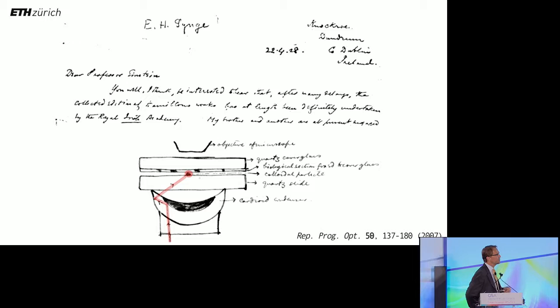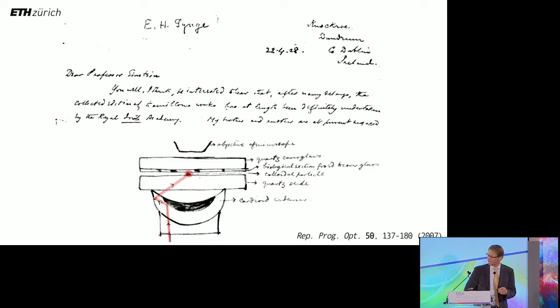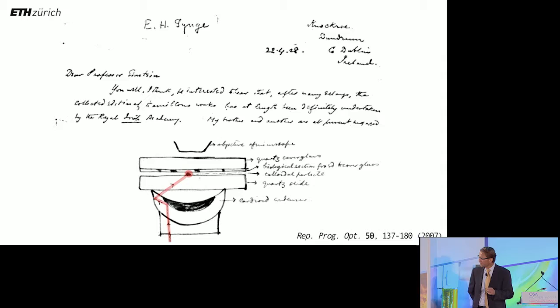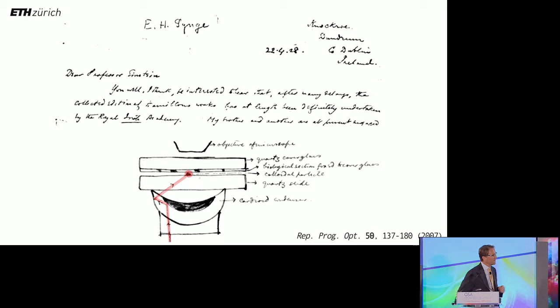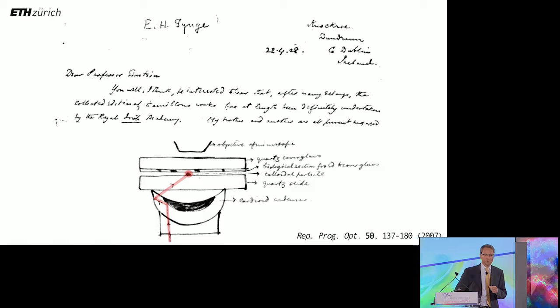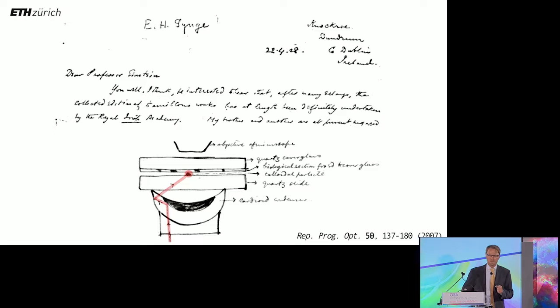So this is a letter sent by Synge to Einstein in 1929. I spare you the details of the content. This is very interesting and you can read about this in this publication on the bottom. Let's focus just on this illustration. This illustration is in his letter to Einstein. You see highlighted in red is a light beam that irradiates what he calls a colloidal particle. And that near-field or the field locally scattered by the particle interacts with a biological section deposited on cover glass. And that local interaction is then collected on the top by an objective. And he reasons that by raster scanning this biological section in close proximity to the stationary gold particle, we can establish an optical image that is not limited by diffraction. So that was in 1929.